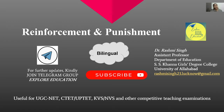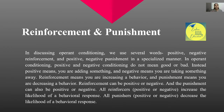In Operant Conditioning, several key words are used: Positive Reinforcement, Negative Reinforcement, Positive Punishment, and Negative Punishment. Skinner has used all these concepts in Operant Conditioning. If you understand these well, it will be easy to understand the full theory. So let's start with Reinforcement and Punishment.